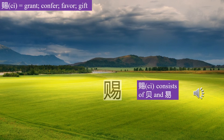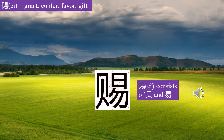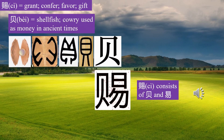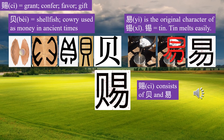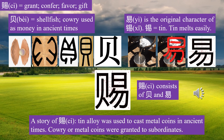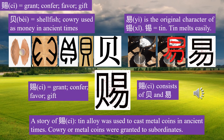The character 赐 (Ci) consists of two parts: 贝 (Bei), meaning shellfish, which was used as money in ancient times, and Yi, the original character of Xi meaning tin. In ancient times, tin alloy was used to cast metal coins, and cowrie shells or metal coins were granted to subordinates. Ci means grant, confer, favor, gift.